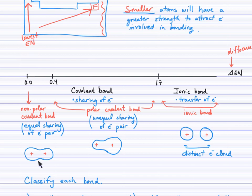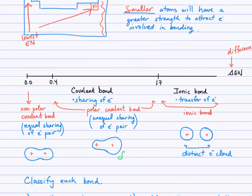In the diagrams I drew here, the positives represent the two nuclei of the atoms involved in the bond. I'm trying to show an equal, symmetrical distribution of electrons around these nuclei for the nonpolar covalent bond — equal sharing. When sharing is unequal, there's a shift in electron density towards the more electronegative atom. We use the lowercase delta symbol to indicate this: the end of the bond that is more electronegative will be the partially negative region (δ-), and the less electronegative end will be partially positive (δ+).